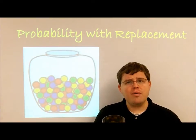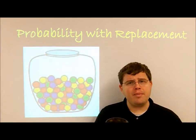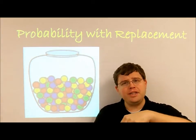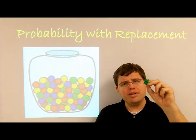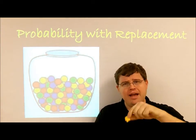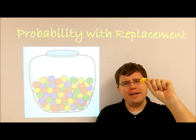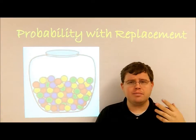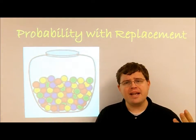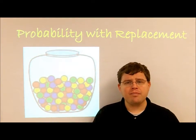I want to know the probability of this compound event. The compound event is reaching in, pulling out a green one, and then pulling out a yellow one. What is the probability of getting a green, then a yellow bear?